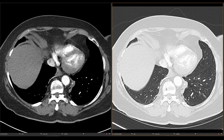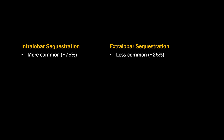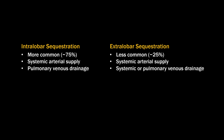A bronchopulmonary sequestration is just an abnormal area of lung tissue that doesn't connect with the central tracheobronchial tree and is supplied by a systemic arterial vessel rather than the pulmonary artery. So what are the differences between intra and extralobar sequestration? Intralobar sequestrations are more common, occurring in about 75% of cases. They both have systemic arterial supply, but they differ in that intralobar sequestrations have pulmonary venous drainage, whereas extralobar sequestrations are usually drained by a systemic vein and rarely by a pulmonary vein.